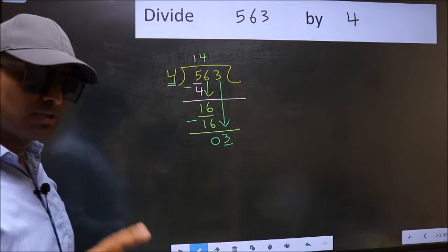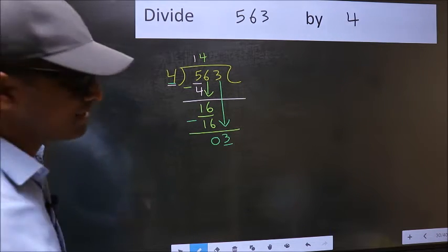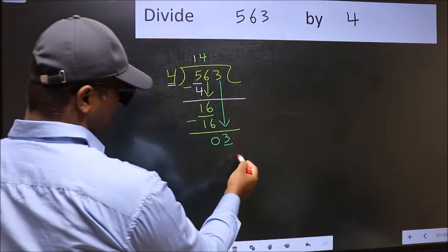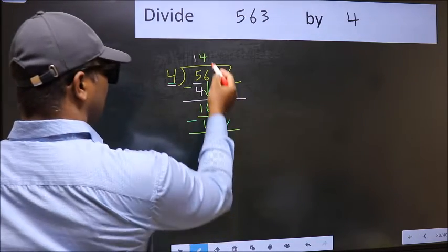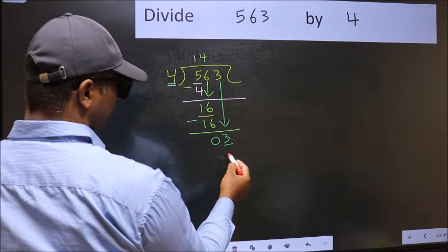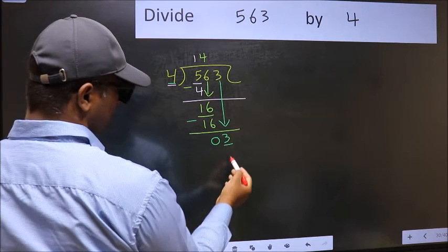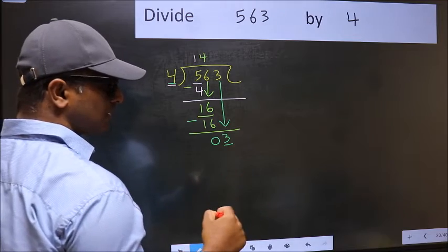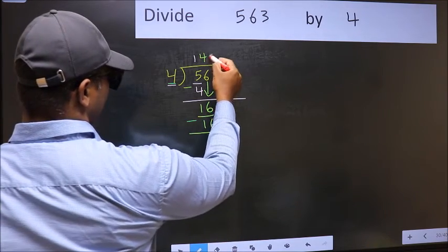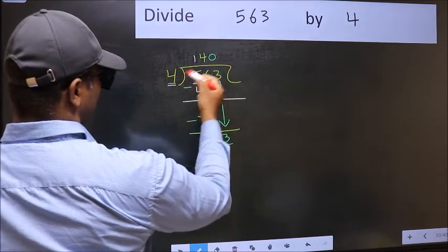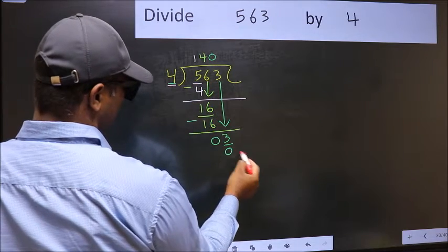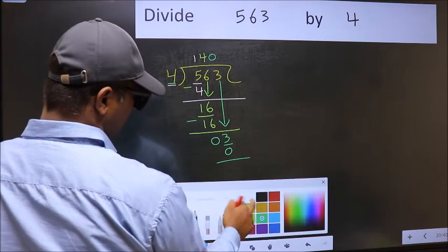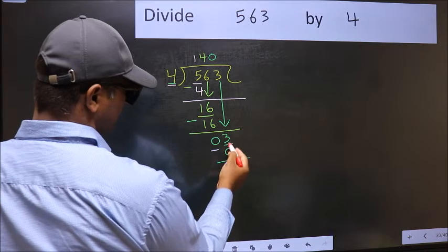Instead, what you should think of doing is, what number should we write here? If I take 1 here, I will get 4 here. But 4 is larger than 3. So what we should do is, we should take 0. So 4 into 0, 0. Now you should subtract. 3 minus 0, 3.